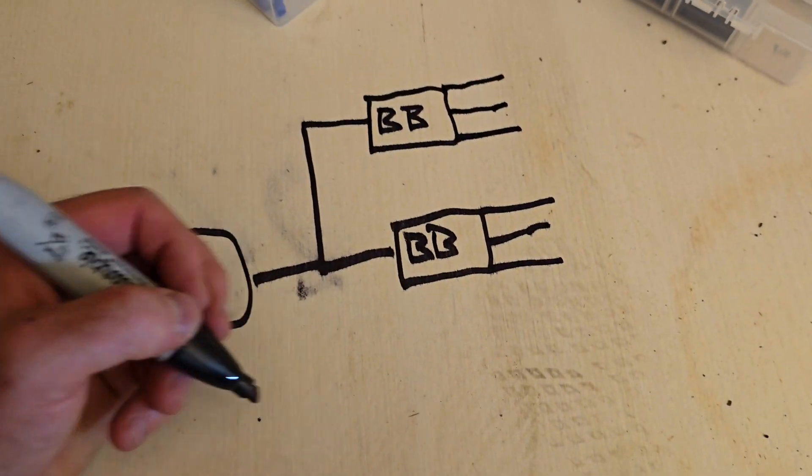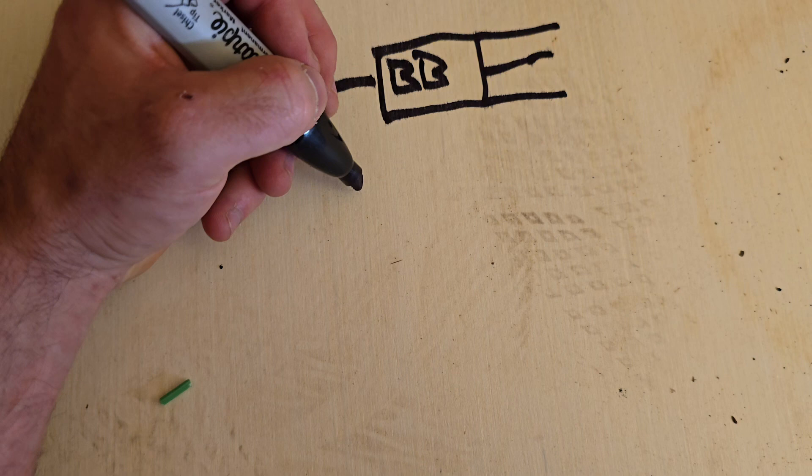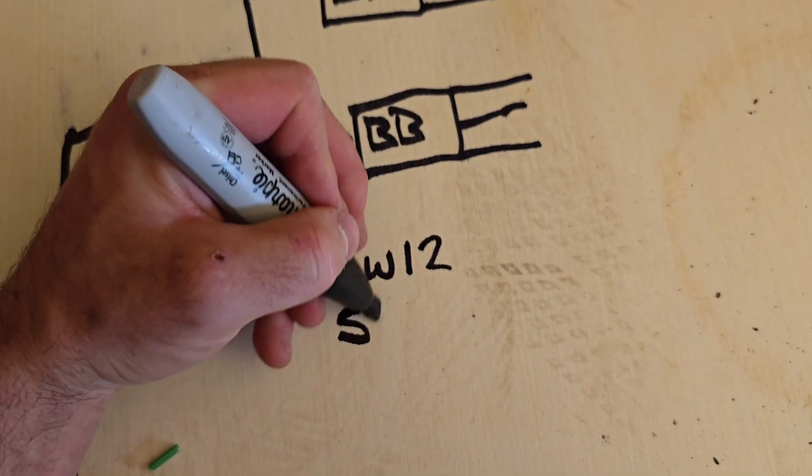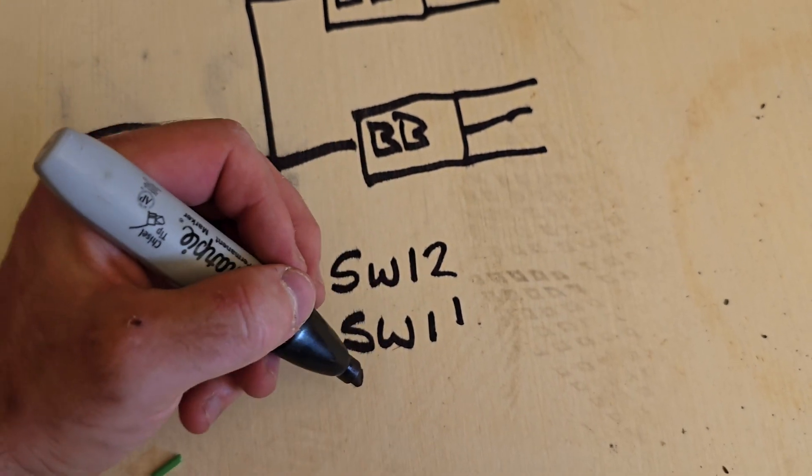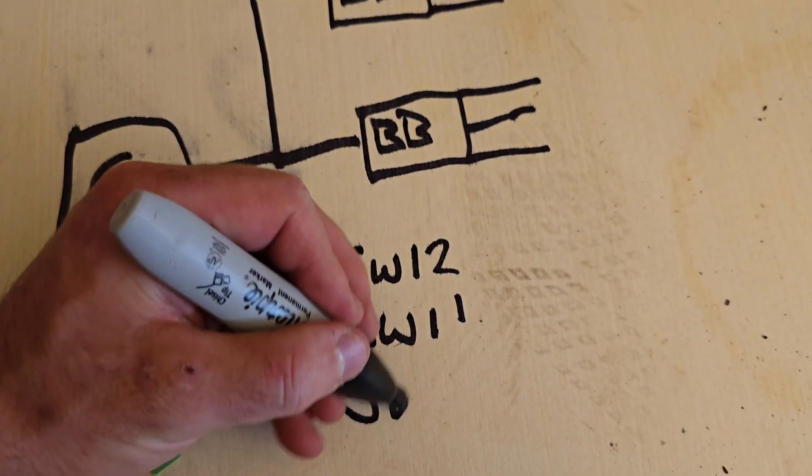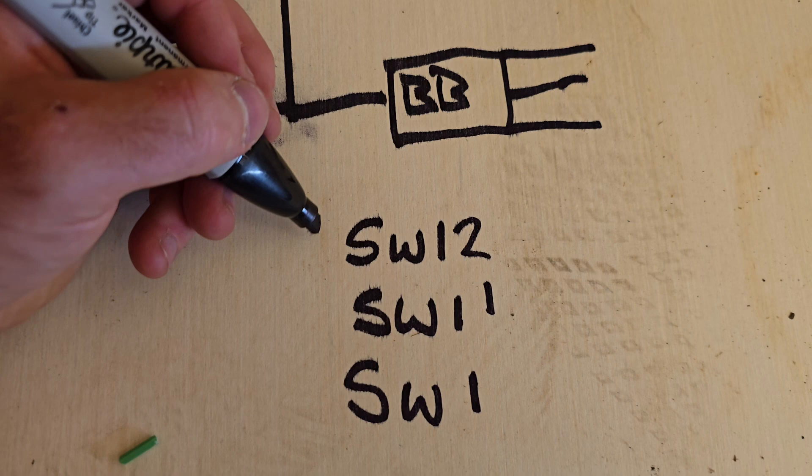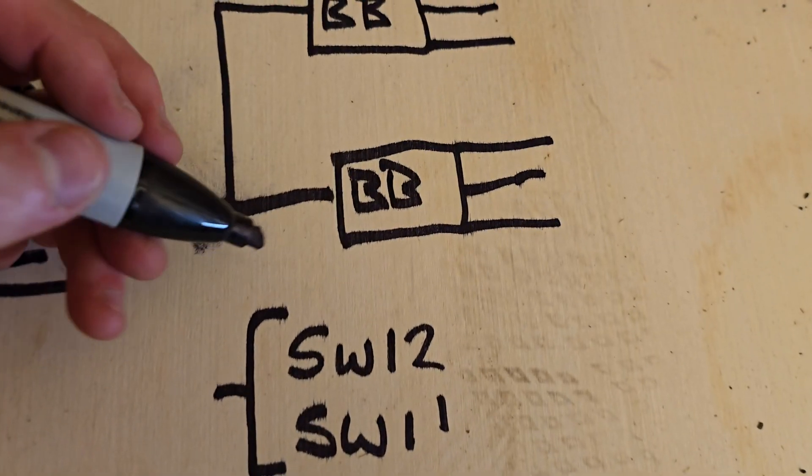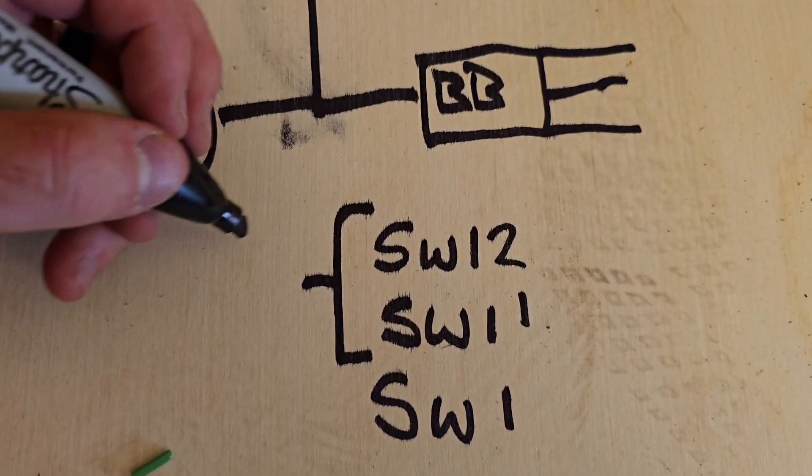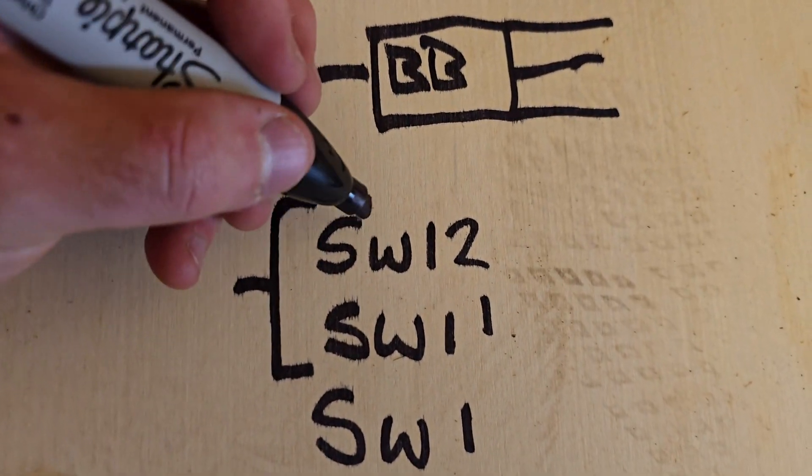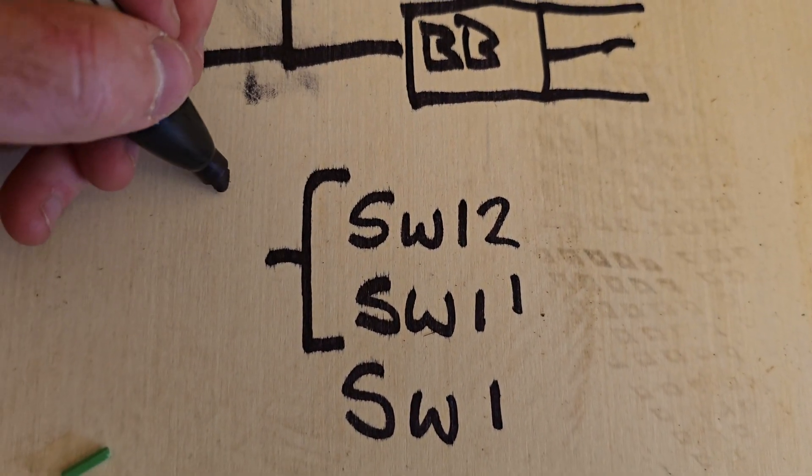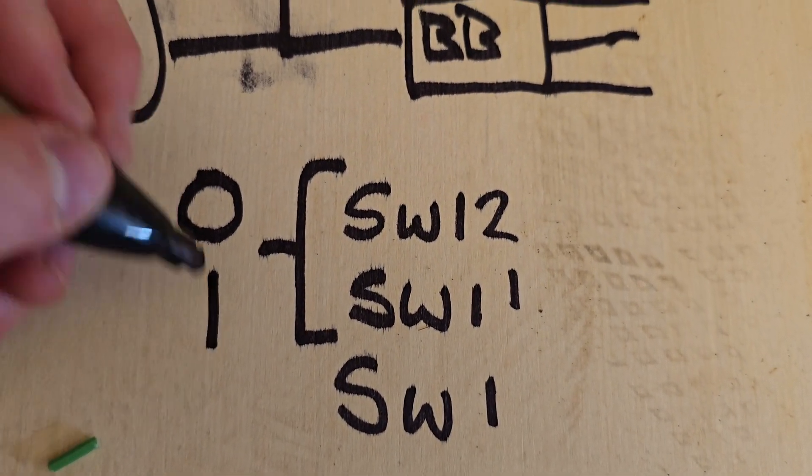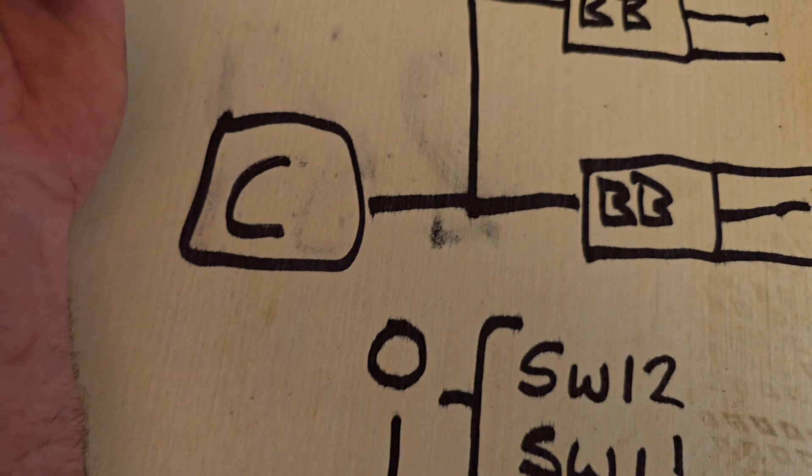Now for the DIP switches, you're going to be looking on these branch boxes specifically for SW12, SW11, and SW1. The first two are to address the actual branch box itself. We're going to start at 01. SW12 is your tens digit, so that won't be set. SW11 is your ones digit, so we're going to set that to one. That's telling your outdoor unit that this branch box is now called 01.